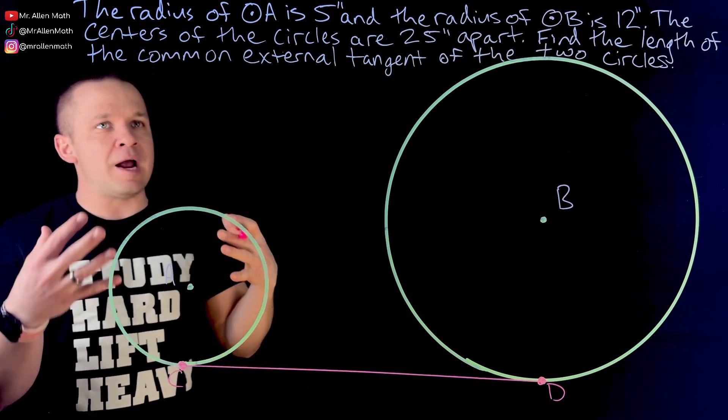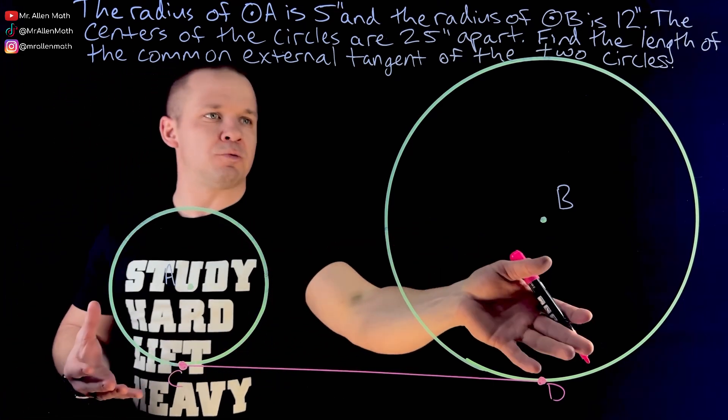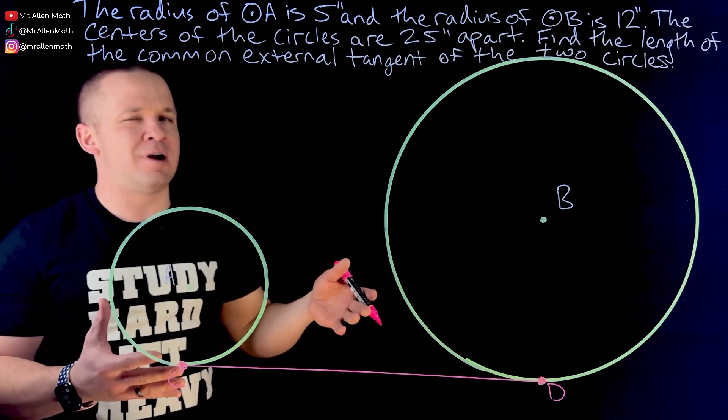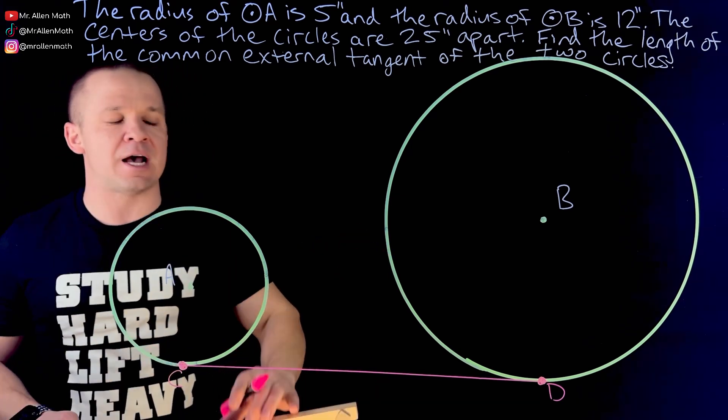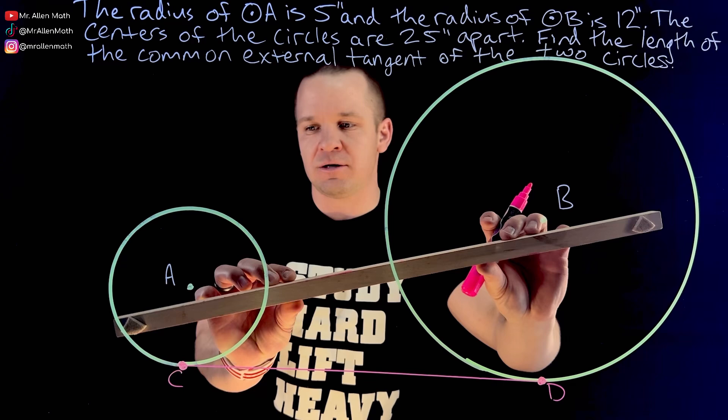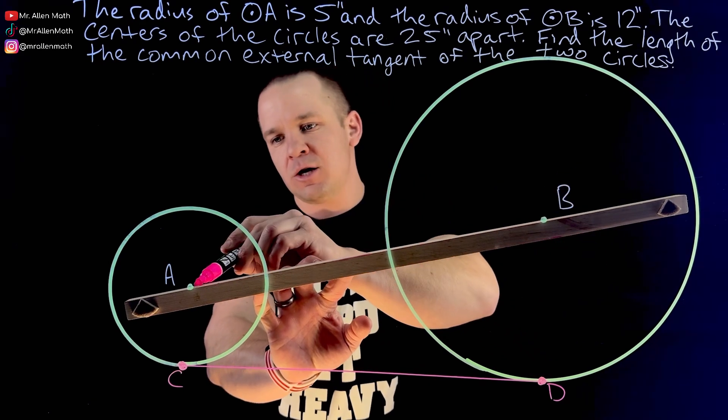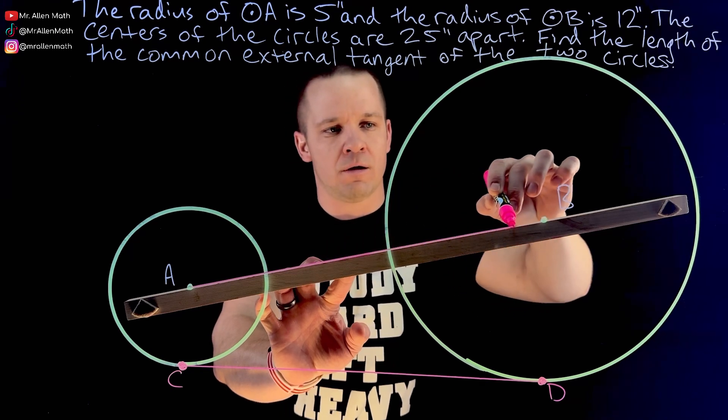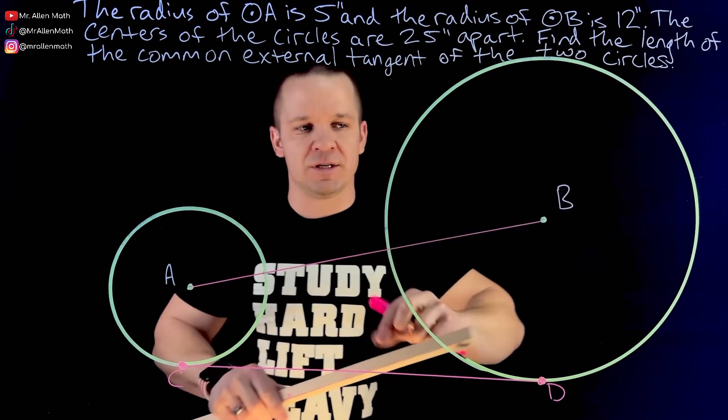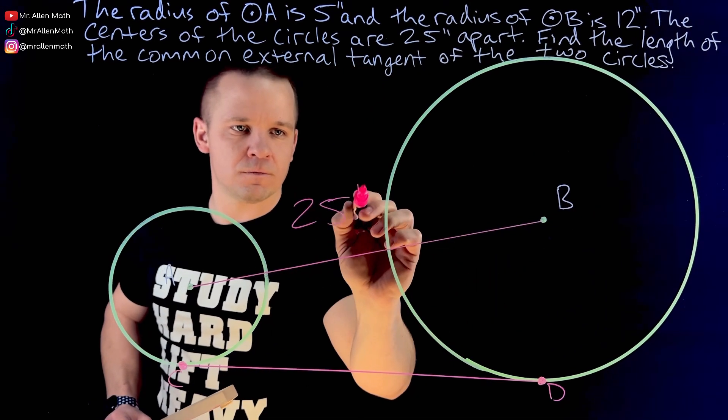Now I know the radius of this circle is 5 inches and this one's 12, but there's an infinite number of ways that I can draw a radius. So maybe I'll hold off on that for a sec. Let's connect these two centers here because I know that length is 25. 25 inches. Boom. So this is 25 inches.